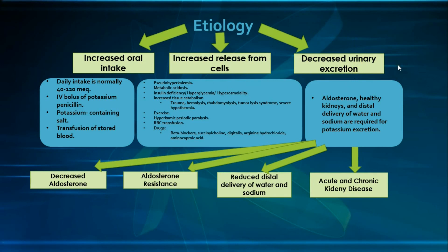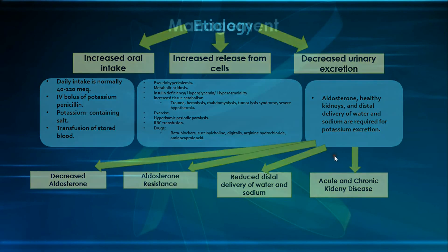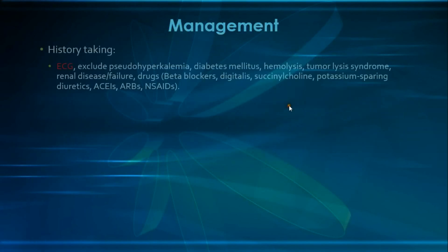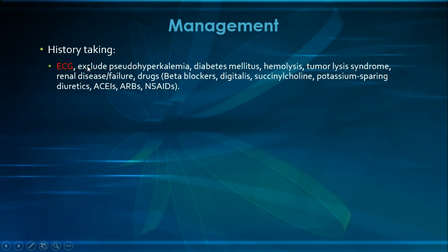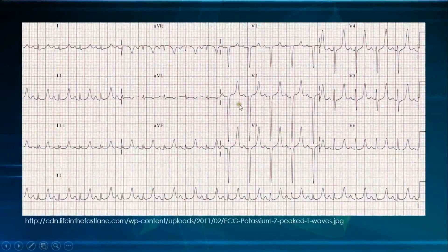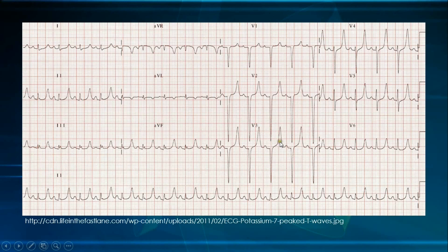We have just finished the etiology of hyperkalemia. Now let's move to the management. This time we are starting with an ECG rather than history taking, because if you have ECG changes your management will be different. We are looking for the following ECG changes: the earliest sign in hyperkalemia is usually the hyperacute T waves, which are tall, thin, and symmetrical — a thin base and symmetrical, unlike the hyperacute T waves in MI which are broad and asymmetrical.